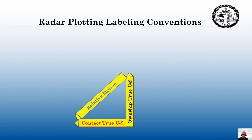We're going to be building a basic radar triangle. It's going to have three legs: one, our own ship's true course and speed, or our true motion; two, relative motion; three, the contact's true course and true speed, or their true motion, which we cannot see on the radar.